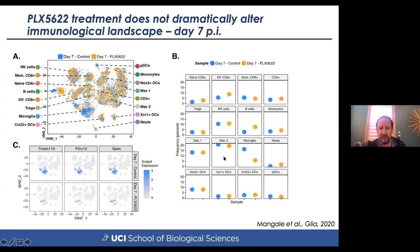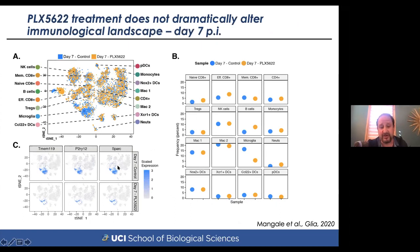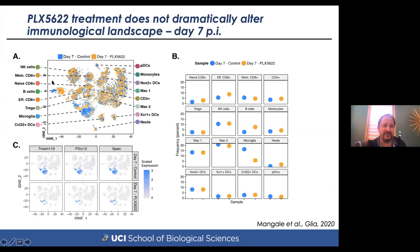Single-cell RNA sequencing showed how microglia ablation affected the immune landscape. In control mice versus PLX-treated animals at day seven post-infection, robust microglia populations are dramatically reduced in PLX-treated animals — consistent with our flow cytometry data. Looking at the dot plots for overall immune cell frequency, we see the expected depletion of microglia. Interestingly, we also see an increase in B cells in PLX-treated animals, which we are currently exploring — specifically how ablation of microglia may affect B cell or antibody-secreting cell infiltration into the brain.